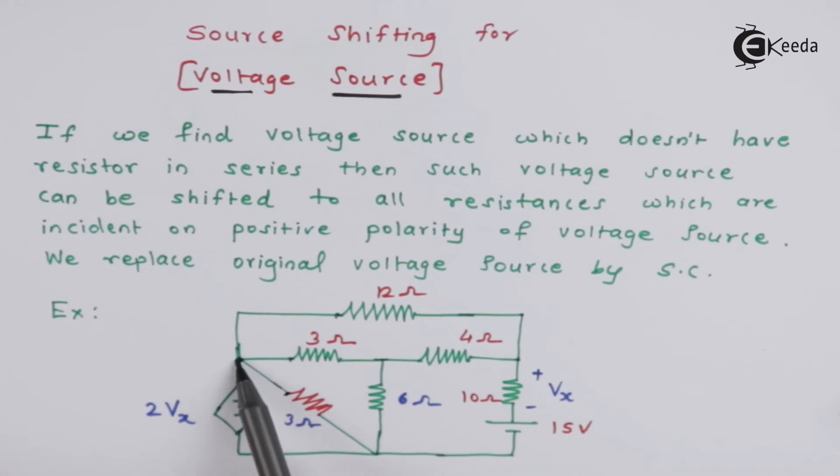And it is sharing this node along with these 2 resistances. And they are having a positive terminal. They are incident on positive polarity of this voltage source. So this positive polarity will be given here first in this manner.